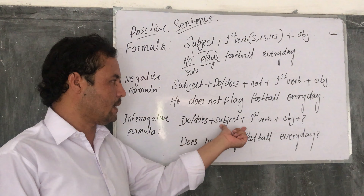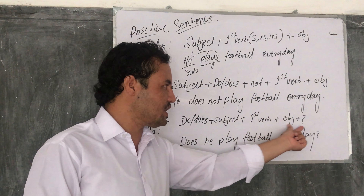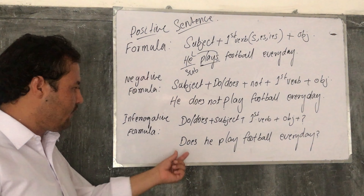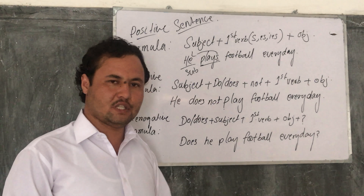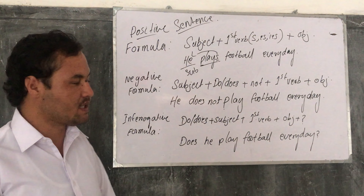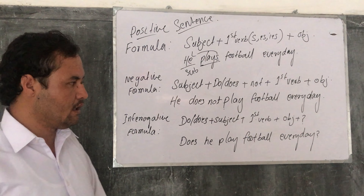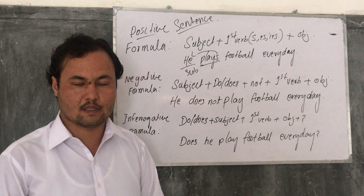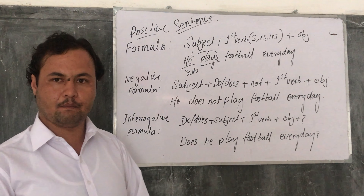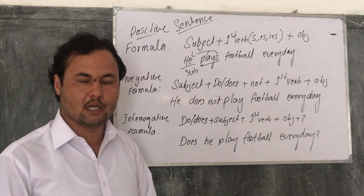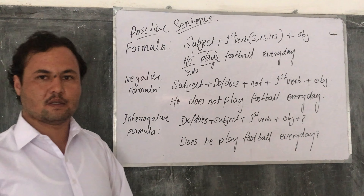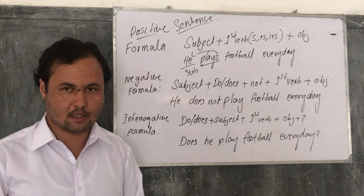For an interrogative sentence, the formula is: Do/Does + subject + first form of the verb + object + question mark. For example: 'Does he play football every day?' or 'Do they play football every day?' I hope you have learned something and enjoyed the video. If you have any questions or comments, kindly write them below and I will respond.